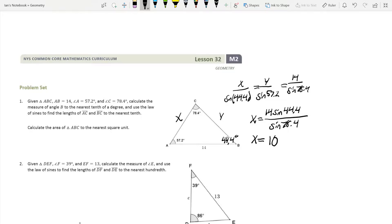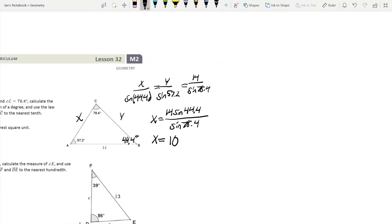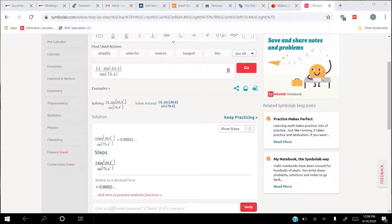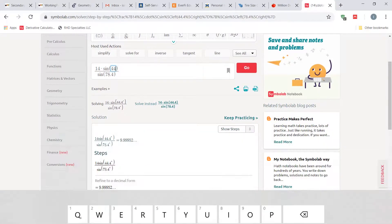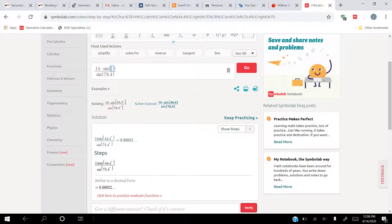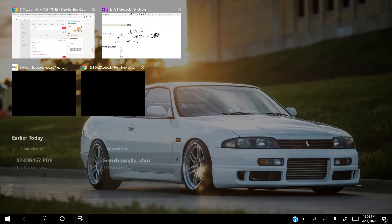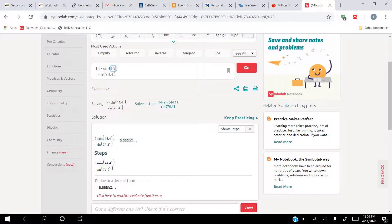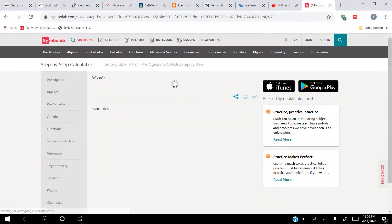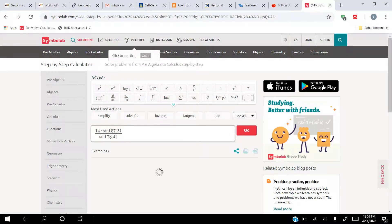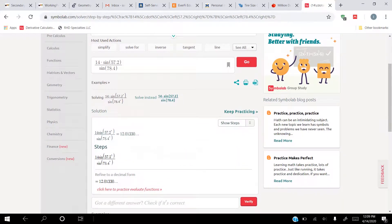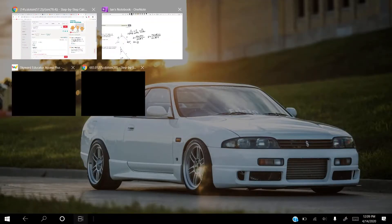So then to solve for Y, we're going to get that Y is equal to 14 sine of 57.2 divided by the sine of 78.4. And again, all we need to do in our calculator is come back over here and change this top number to 57.2. Which is 12.01, which we're going to round to the nearest tenth as 12.